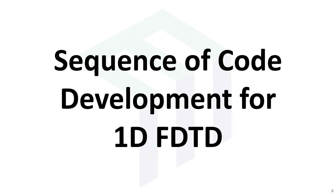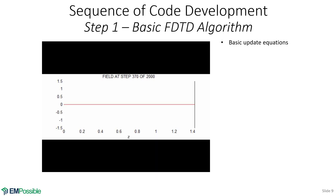Sequence of code development for one-dimensional finite difference time domain. The very first thing to implement is just the basic update equations — the E-H, E-H loop. Calculate the curl of the magnetic fields, update the electric fields, then calculate the curl of the electric fields and update the magnetic fields, back and forth. If that's all we've done, nothing should happen because we haven't injected any source. So that's the first step: just the basic update equations and we should see literally nothing happening.